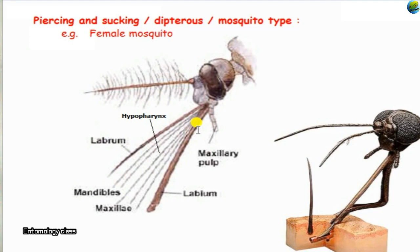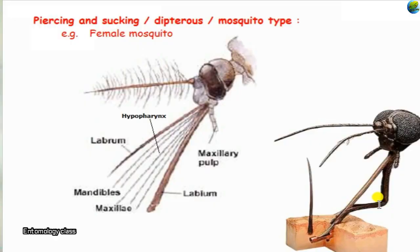So totally six stylets are formed and kept under the labium, just as in the bug type. The labium protects all the stylets. Mosquitoes use the labium just like a gun holster, and from that holster the stylets come out to pierce the host tissue.